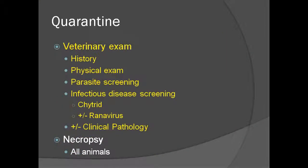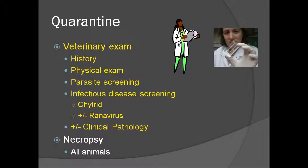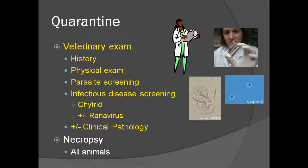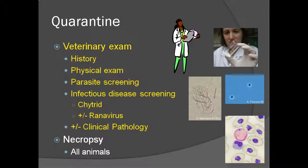Veterinary examination of animals in quarantine should, at a minimum, include: a review of the animal's history during quarantine such as eating and activity patterns; a physical exam including assessment of body condition; testing and treatment for internal parasites; and in most cases, testing and treatment for chytrid. Ranavirus testing may be performed, but is most informative only if there are deaths in the group. Clinical pathologies such as hematology and biochemistries can be performed in amphibians, but interpretation can be difficult, particularly in non-symptomatic individuals.